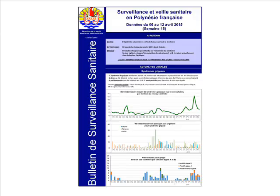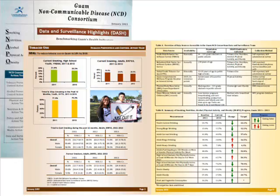Here is an example: the Bulletin of Public Health Surveillance from French Polynesia. Looking at it, consider: What information is being displayed? Why is it important? Where does the source data come from? Who is producing the report? Who is the target audience? What impact or action do the producers want to trigger? What are the product's strengths and weaknesses? Do you think it will have the intended impact?